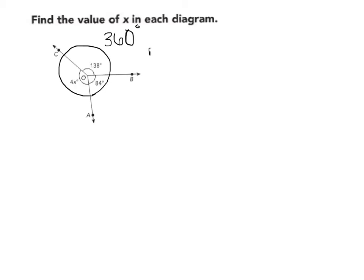We're going to take the measure of angle AOC, which is here, plus the measure of angle AOB, which is right here, plus the measure of angle BOC, which is right here. And all of these have to add up to 360 degrees.